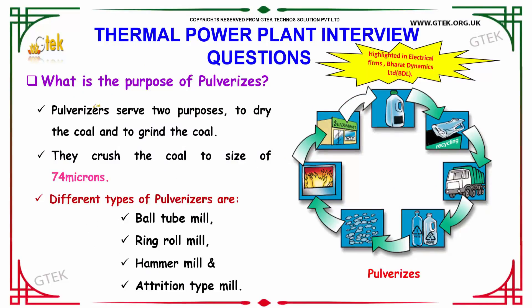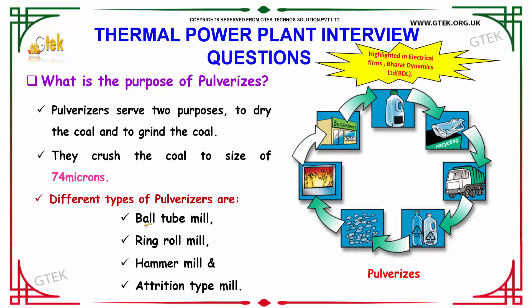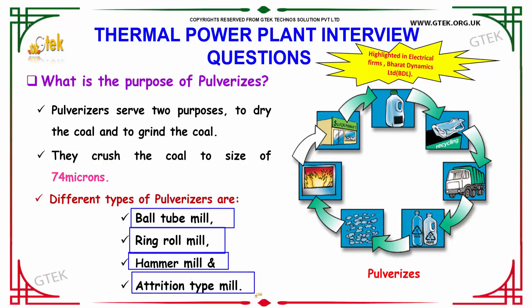What is the purpose of a pulverizer? The pulverizer serves two purposes: to dry the coal and to grind the coal. They crush coal to a size of 74 microns. Different types of pulverizers available are ball tube mill, ring and ball mill, hammer mill, and the attrition type mill.